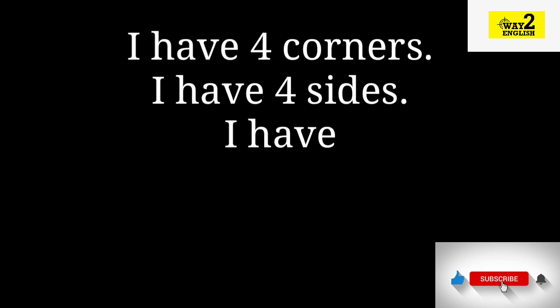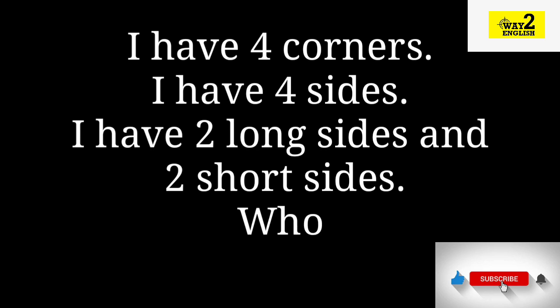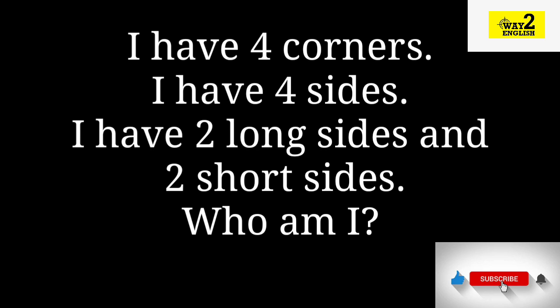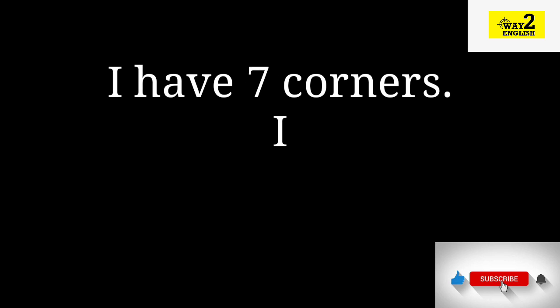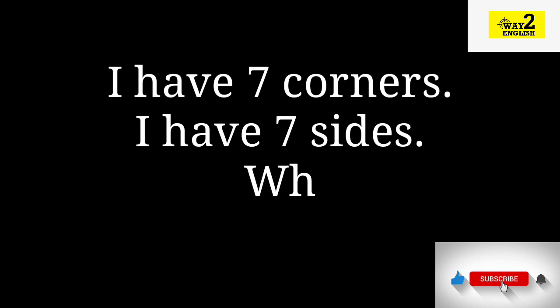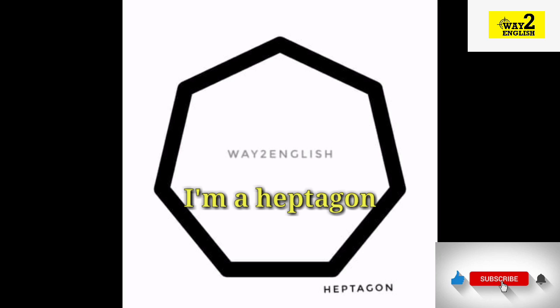I have four corners. I have four sides. I have two long sides and two short sides. Who am I? I am a rectangle. I have seven corners. I have seven sides. Who am I? I am a heptagon.